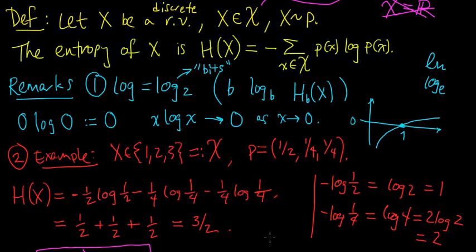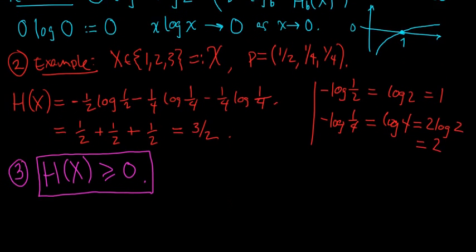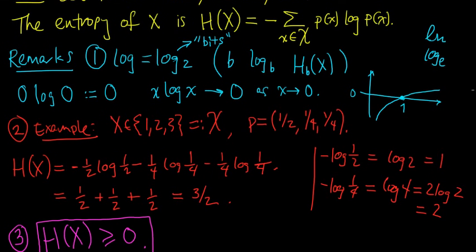In the previous video, we started looking at information entropy, and this time we're going to continue looking at some basic properties of entropy. We're going to have a long list of remarks here about this definition. Just recall, this was the definition of the entropy of the random variable, discrete random variable x.